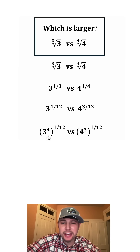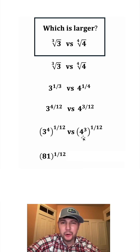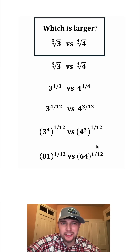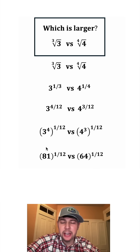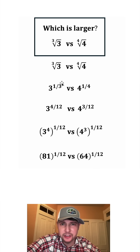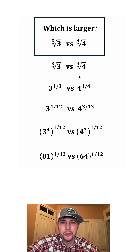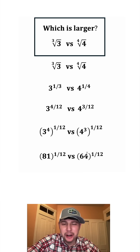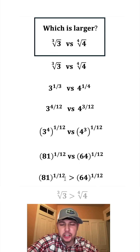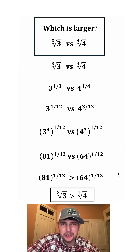So now we have three to the fourth to the one twelfth versus four to the third to the one twelfth. Three to the fourth is three times three times three times three, so this can be written as 81 to the one twelfth. And four to the third power is four times four times four, so this changes into 64 to the one twelfth. Going through all these steps, we've not changed the value of these at all. So 81 to the one twelfth is the exact same thing as the cube root of 3, and 64 to the one twelfth is the exact same thing as the fourth root of 4. Since 81 is greater than 64, 81 to the one twelfth will be greater than 64 to the one twelfth. So the cube root of 3 is greater than the fourth root of 4.